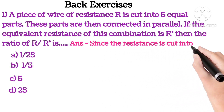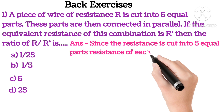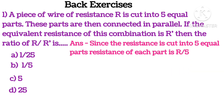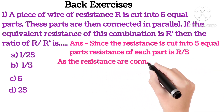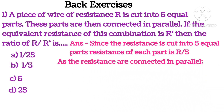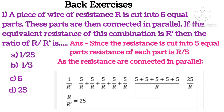Answer is: since the resistance is cut into 5 equal parts, resistance of each part is R by 5. As the resistance is connected in parallel, so 1 by R', putting the values, we get 25 by R. So R upon R' will be 25. D option is correct, 25.